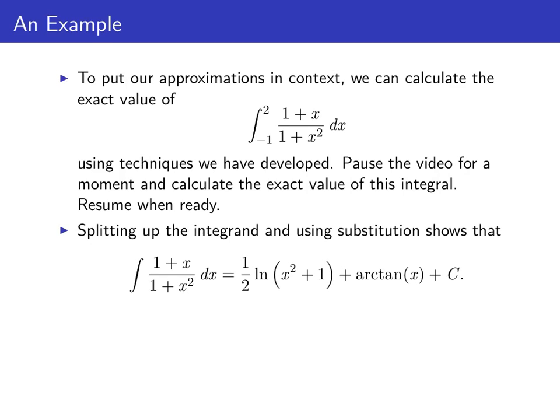We can split up the integrand into 1/(1 + x²) + x/(1 + x²). One of those pieces integrates as an arc tangent, the other one we can do with a substitution. So we can see that an anti-derivative for (1 + x)/(1 + x²) is (1/2)ln(x² + 1) + arctan(x).